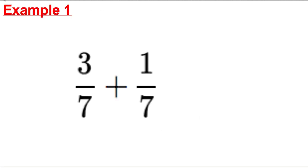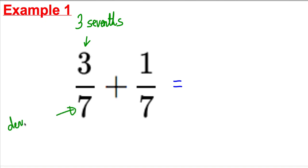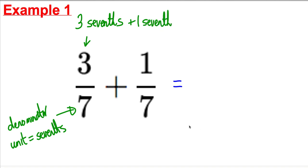Here's example one — please copy this in your book. We have 3 over 7 plus 1 over 7. A better way of saying this: this represents three sevenths. The number on the bottom — the denominator — is the unit, and in this case the unit is sevenths. So we have three sevenths plus one seventh. How many sevenths do we have?